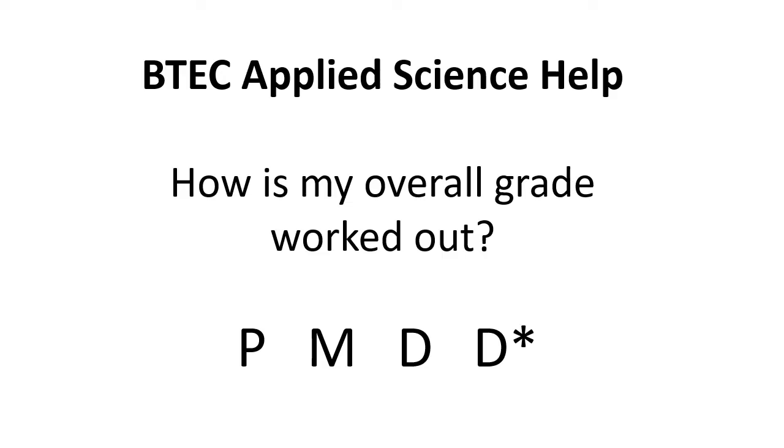How do they work out if you get pass, merit, distinction, or distinction star? In the case of extended certificate, it would be pass, pass, merit, merit, distinction, distinction, or D star, D star. So how do they work it out? Well, that's what I'm going to try and explain.